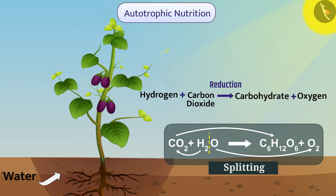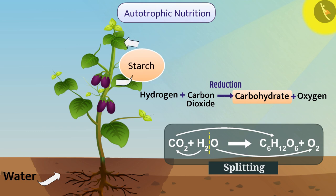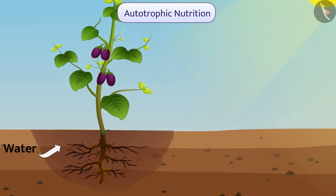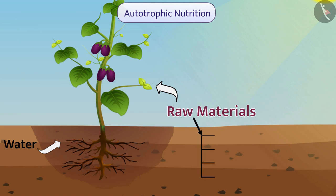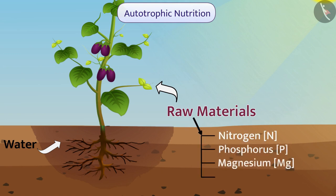Organisms get energy from carbohydrates. In the form of starch, carbohydrates are stored in the leaves or in different parts. Along with energy, autotrophic organisms also need some other raw materials so as to maintain their body, such as nitrogen, phosphorus, magnesium, iron, and other substances which are obtained from soil.